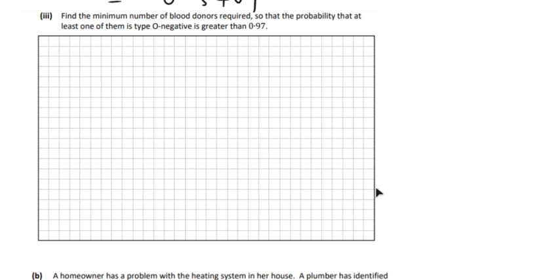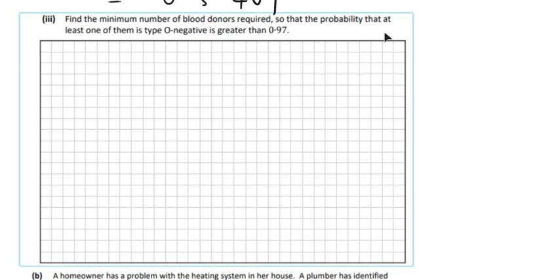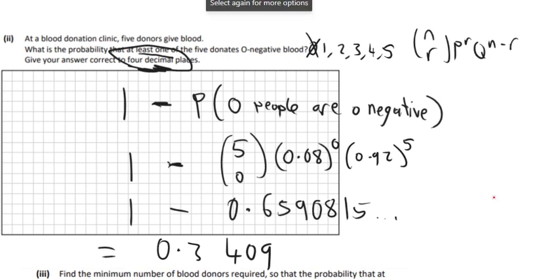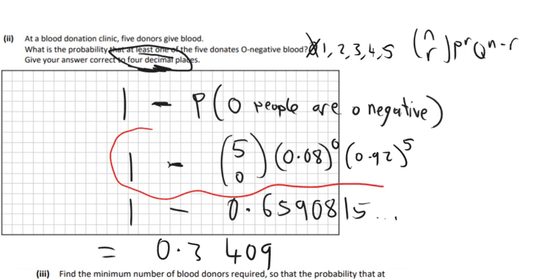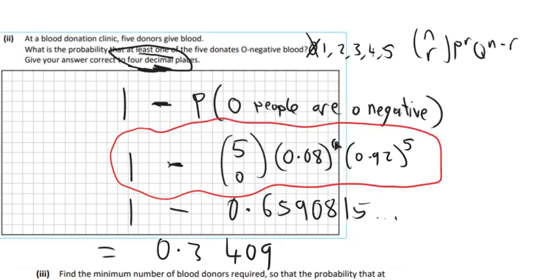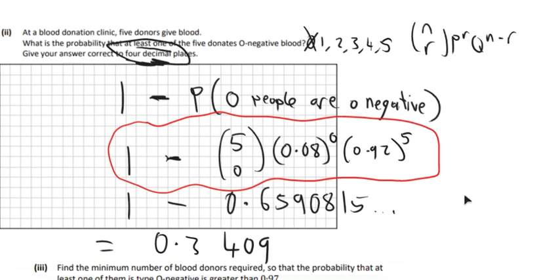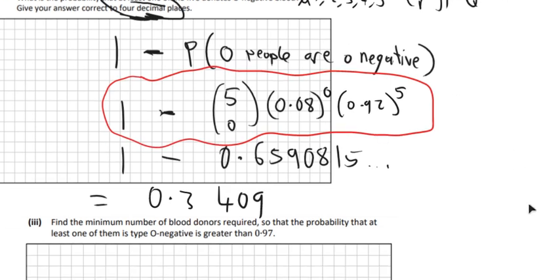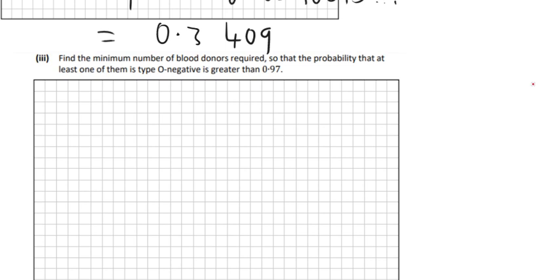So next part: find the minimum number of blood donors required so that the probability that at least one of them is type O negative is greater than 0.97. This is the same approach as the last part — for at least one being O negative — but we don't know how many there are altogether. We're going to write the same thing again but put in an N instead of the 5, and let it all be greater than 0.97 to get an equation. So it'll be 1 take away N choose 0.